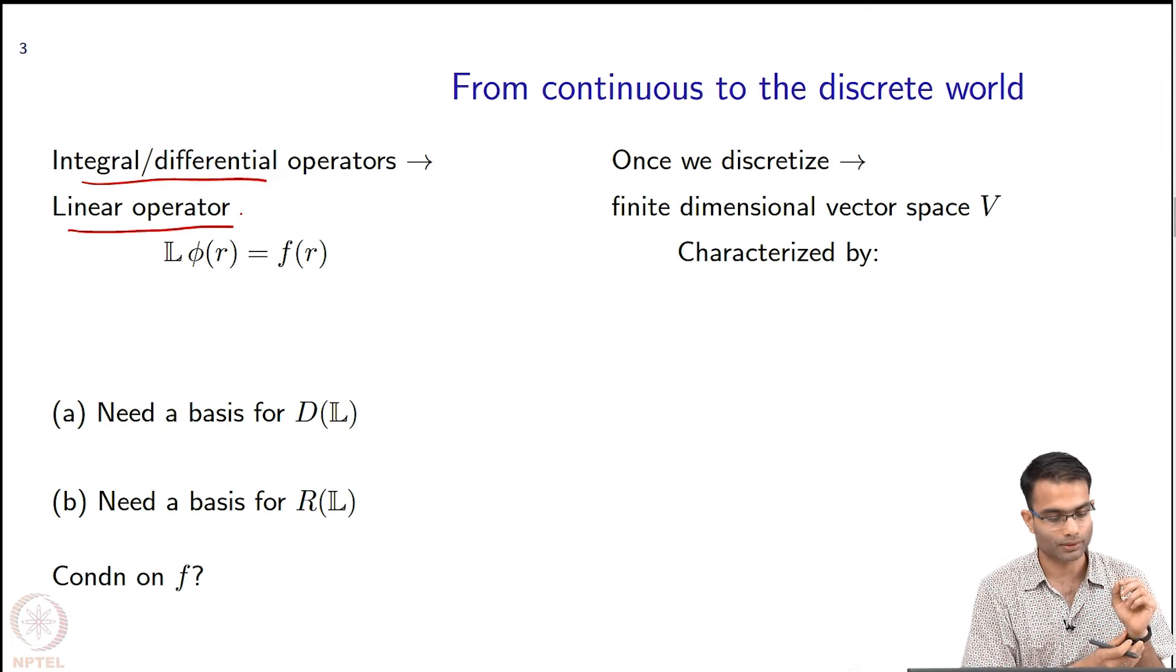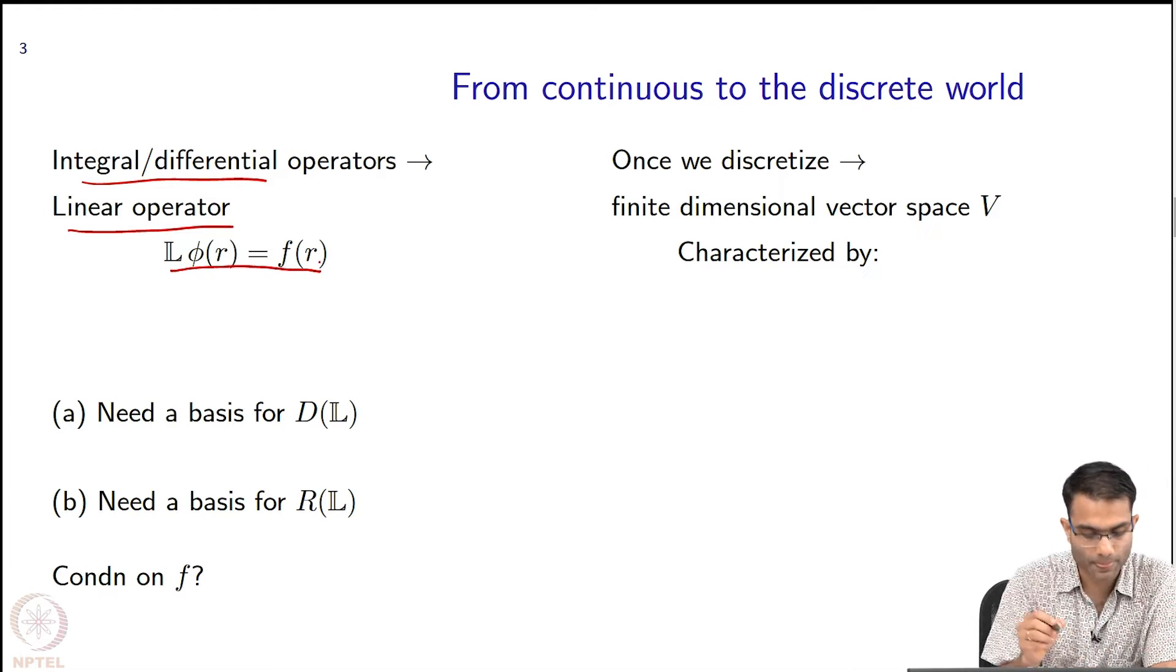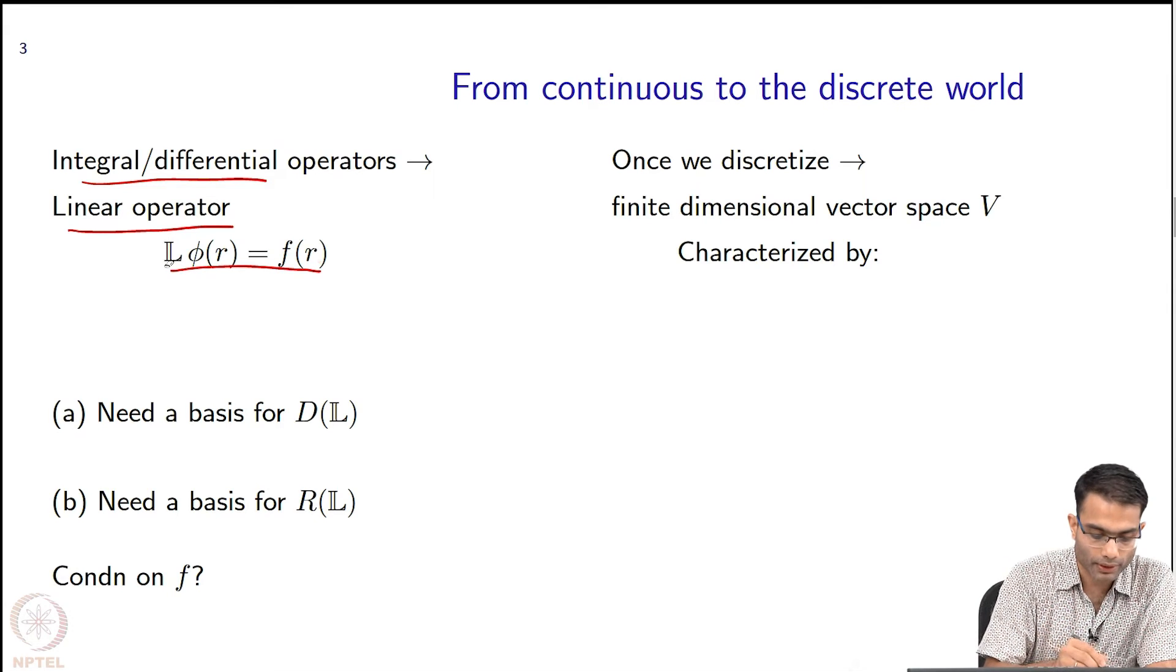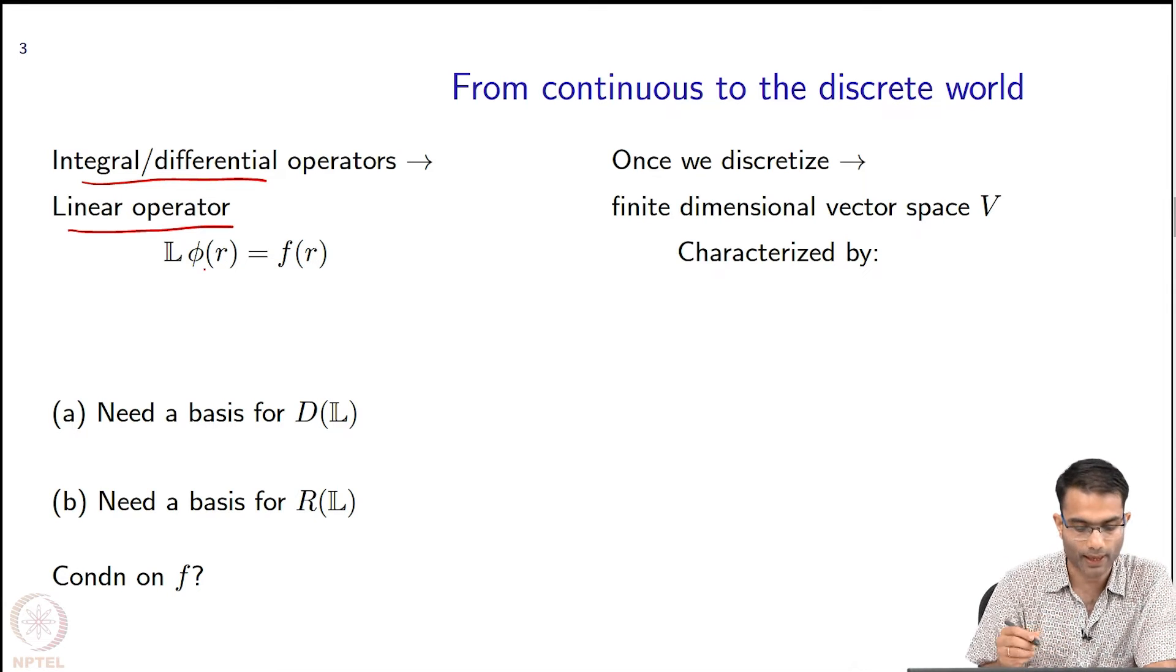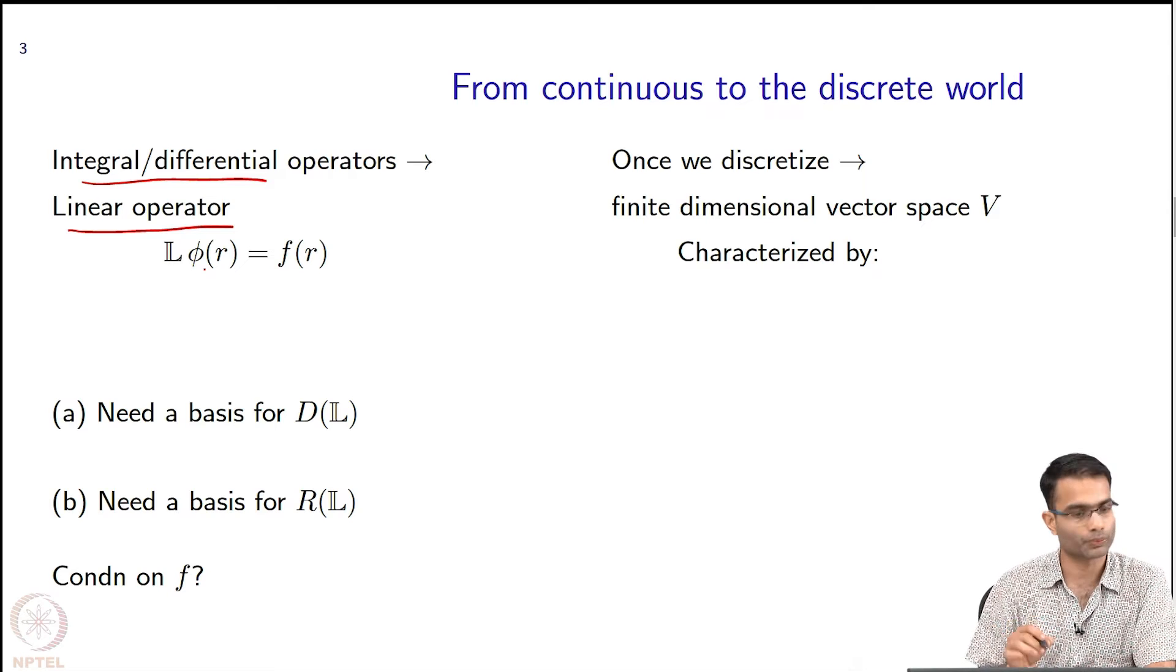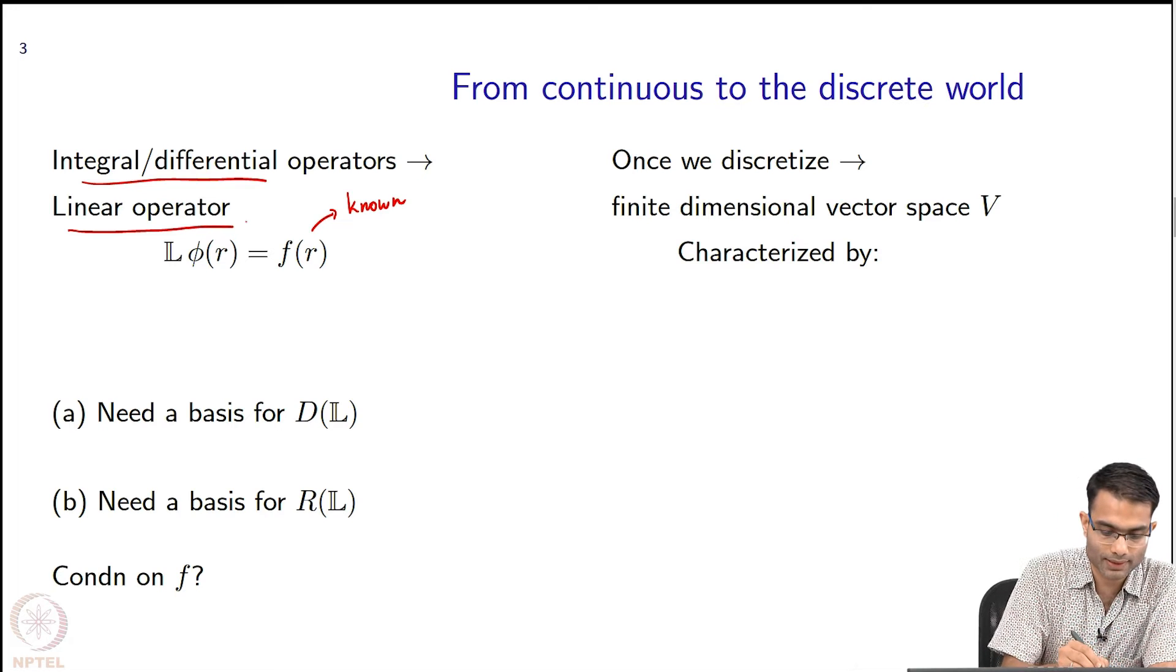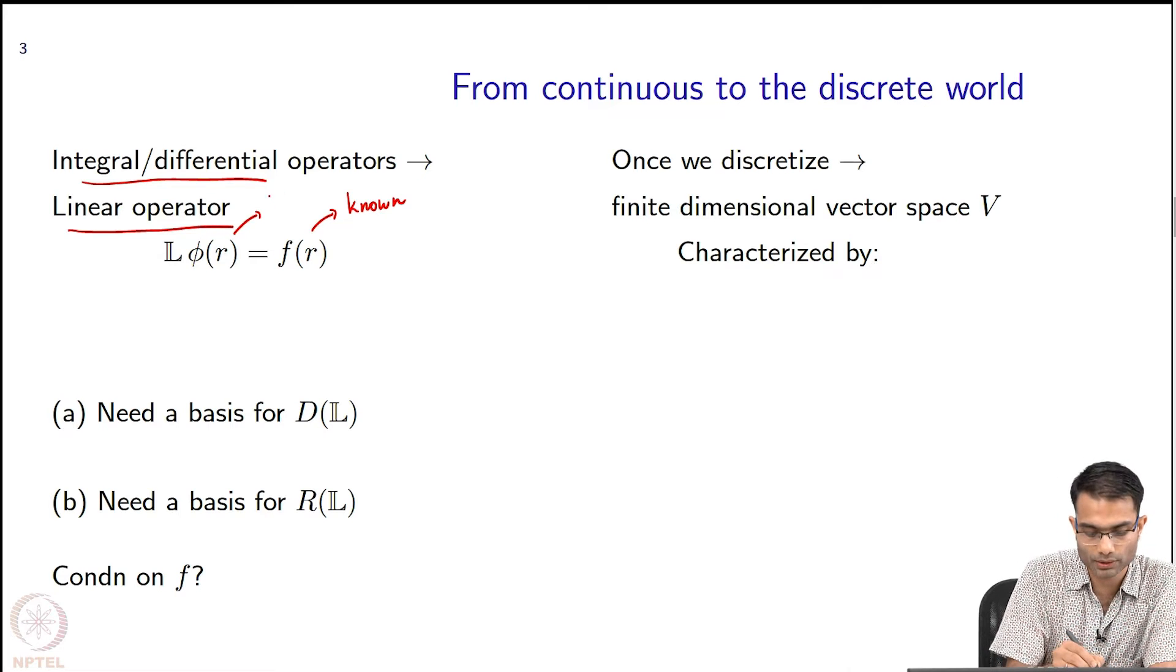So let us take a very general problem over here. Capital L over here, this is some operator acting on phi and giving f. So the usual interpretation is what we will use: that f is known and this phi over here is something we want.